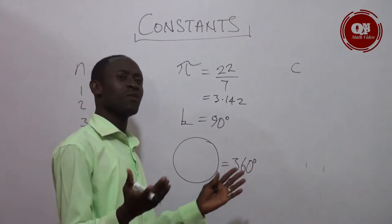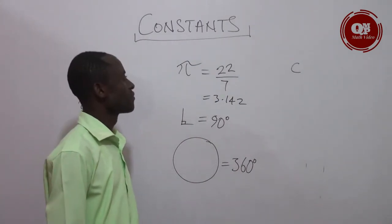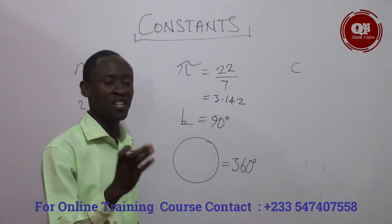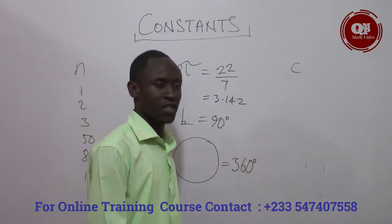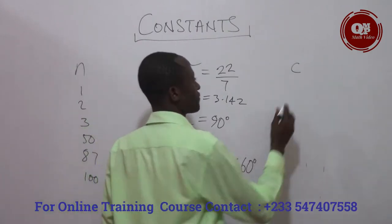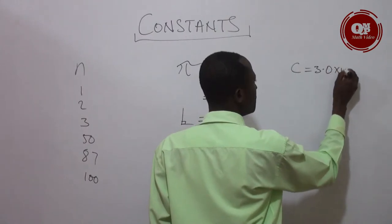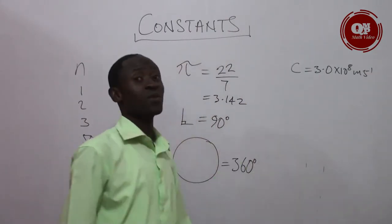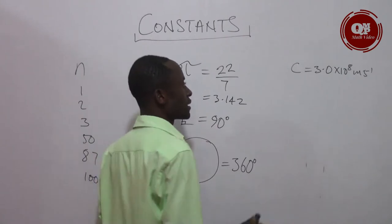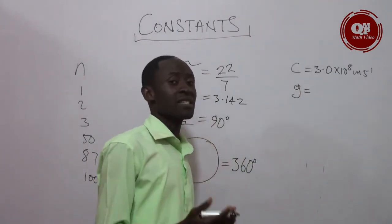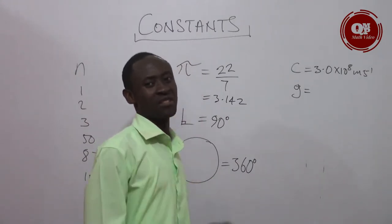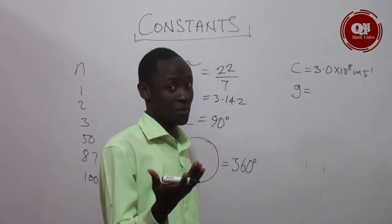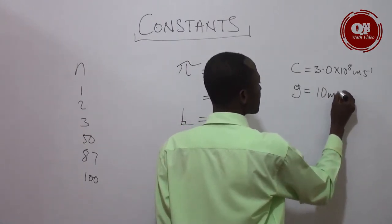Now let us move on to the other form of constant. We have the very first one with a small c. The c here refers to the speed of light, so c is a constant. The numerical value of c is three point zero times ten to the power eight meters per second. We also have another constant called g, which is acceleration due to gravity. It has a numerical value, by approximation, of ten meters per second squared.